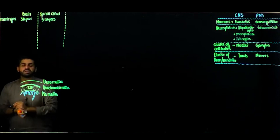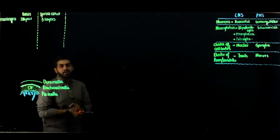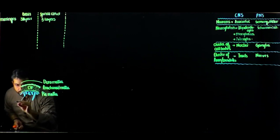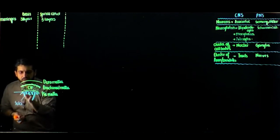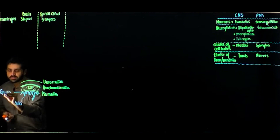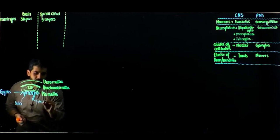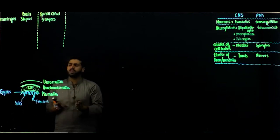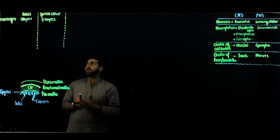The surface area of the brain is increased to improve intelligence — brain intelligence depends on surface area, not size. The brain has sulci (depressions) and gyri (elevated ridges). Deep fissures, like those separating the frontal lobe and parietal lobe or the cerebral hemispheres, are also present. These three meningeal layers are visible in both the brain and spinal cord.